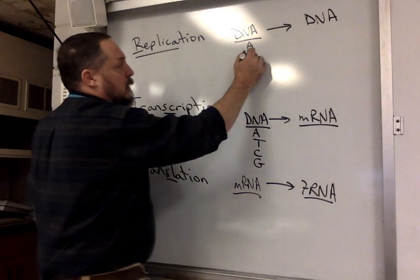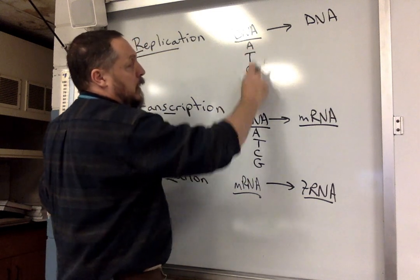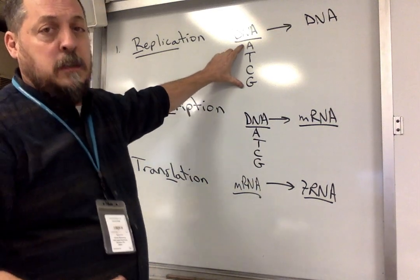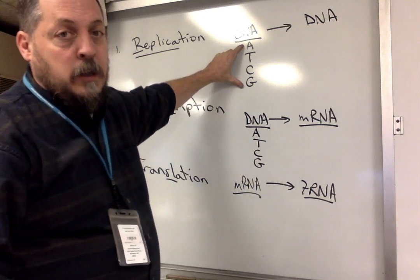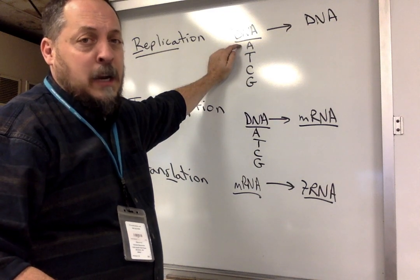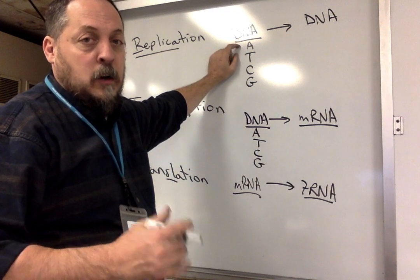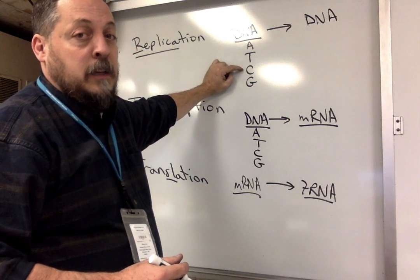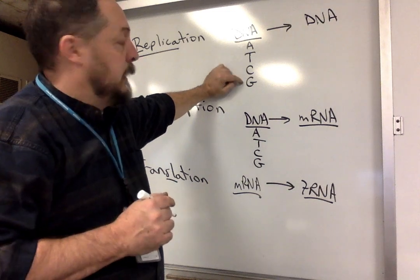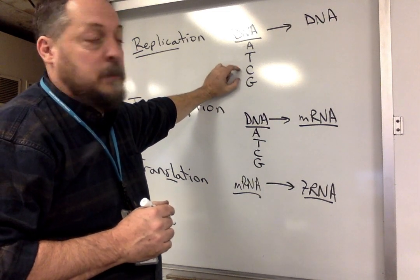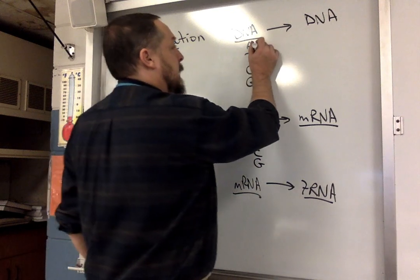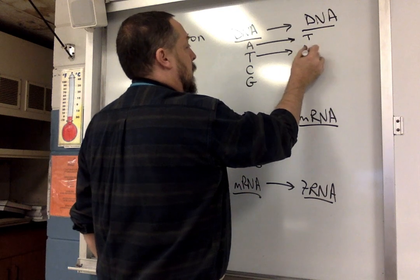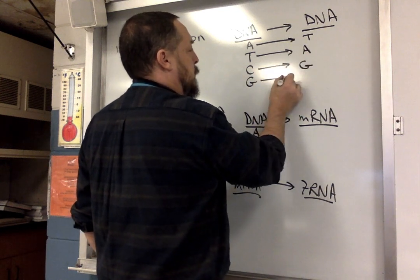Looking at these four letters, if you were to pick two to make a word you'd choose AT — remember A always pairs with T when going from DNA to DNA. C pairs with G because G looks like a C with a little tooth on it. So going from DNA to DNA: A pairs with T, T pairs with A, C pairs with G, and G pairs with C.